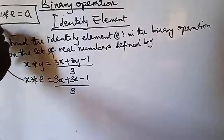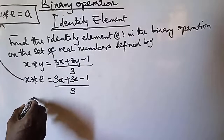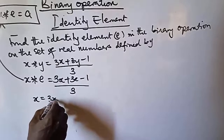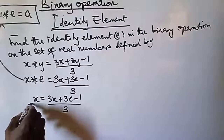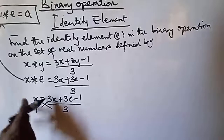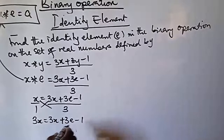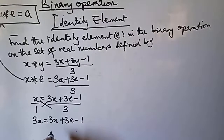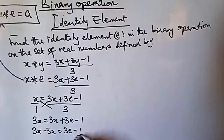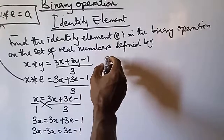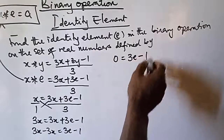So x operation e gives us x, which equals (3x + 3e − 1) / 3. Cross-multiplying — since the right side is over 3 and x is over 1 — we get: 3x = 3x + 3e − 1. Collecting like terms: 3x − 3x = 3e − 1, which gives us 0 = 3e − 1.